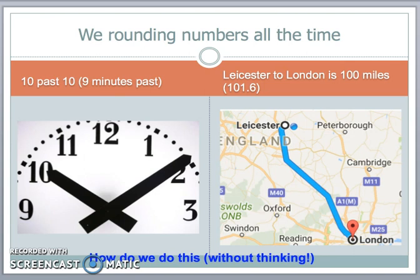If somebody asked me what is the distance from Leicester to London, I would say it's 100 miles. In actual fact, it's 101.6 miles. But when I'm in casual conversation with somebody, 100 miles is about right. It's more memorable than 101.6 miles.